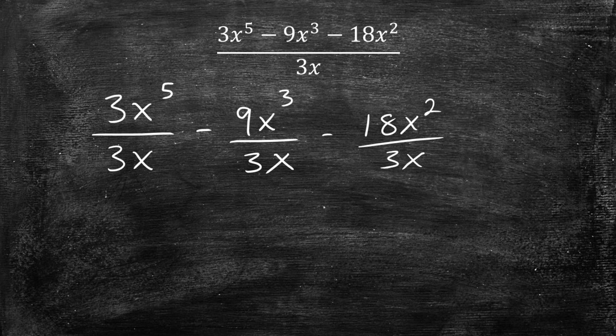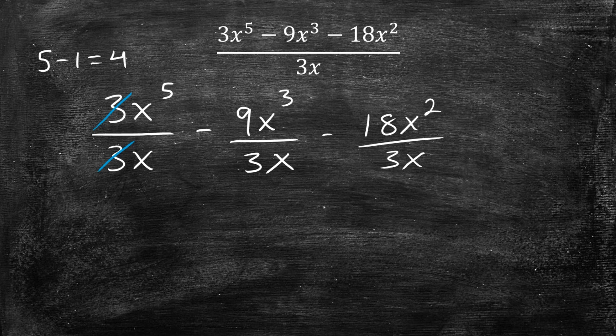So we get 3x to the fifth divided by 3x minus 9x cubed over 3x minus 18x squared over 3x. And now what we can do is simplify. So let's start from the left hand side. These threes cancel and whenever you have a variable with exponents divided by another one, what you do is subtract the exponents. So in this case the top one is a 5, the bottom one is a 1, so it'll be x to the fourth.